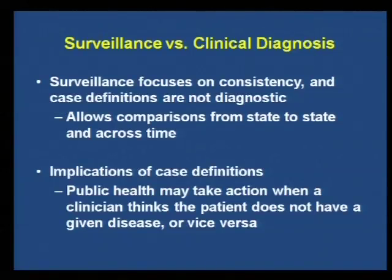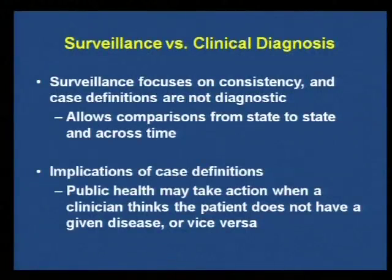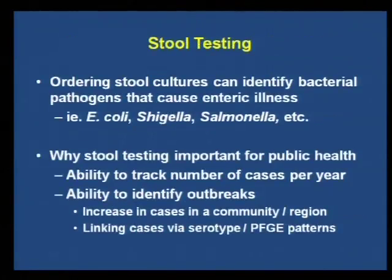Surveillance case definitions are focused on consistency. The goal is to be able to compare state to state or across time — is E. coli going up in the U.S. over time, or does Iowa have more cases per person than California? In order to do that, everybody has to use the same definition. There are a few implications for providers: sometimes you might say you think a patient has a certain disease, and we might say it doesn't meet the case definition. We're not doubting your clinical abilities — it's all about consistency. Public health action can work the same way in reverse.